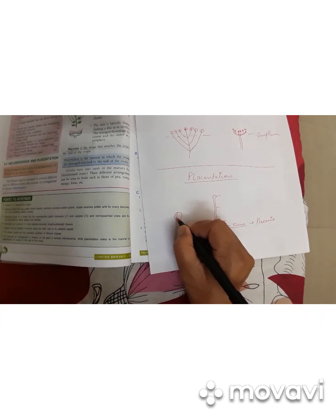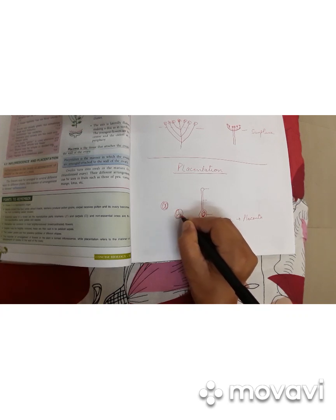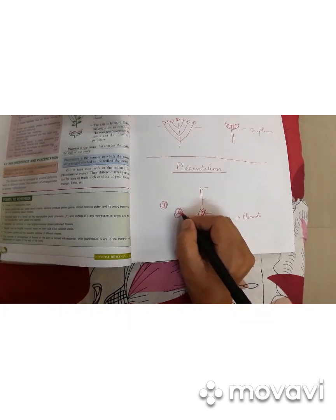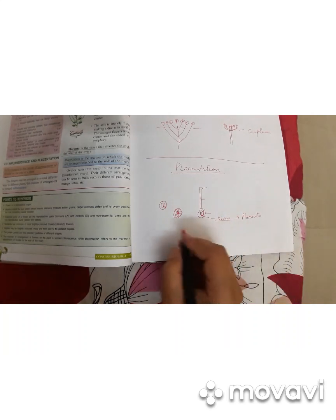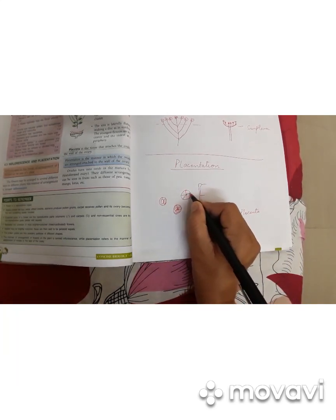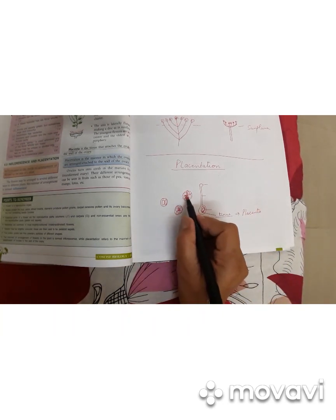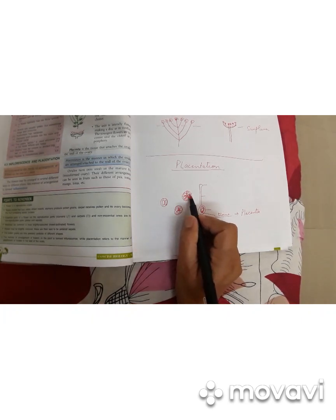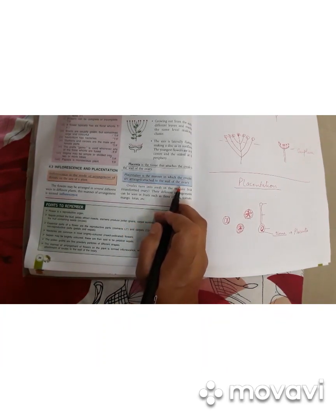If the ovary has two locules, two chambers, we call it bilocular. If there is one, it is unilocular. Sometimes in some plants it has three chambers — so there are various numbers: bilocular, trilocular, pentalocular, or multilocular. The various forms according to which the ovules are arranged inside the ovary is called placentation. Placenta is present around and it helps the ovules attach to the ovary wall.